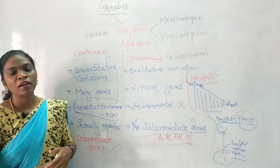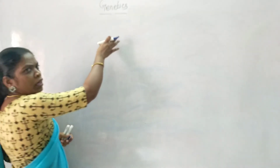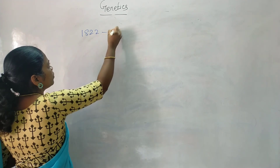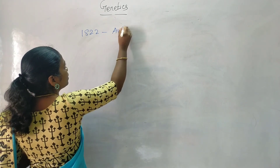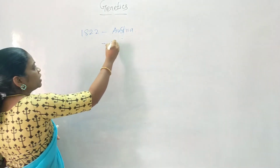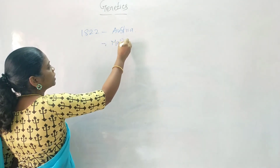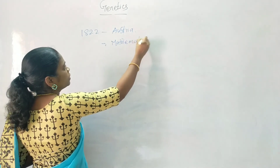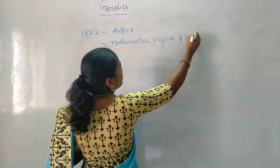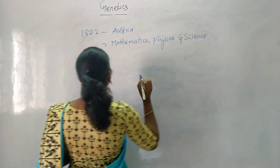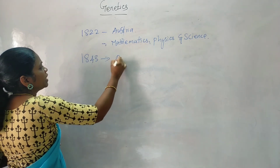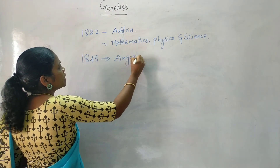Now we will learn about Mendel's contribution towards genetics. He was born in the year 1822 in Austria. He studied mathematics, physics, and science.